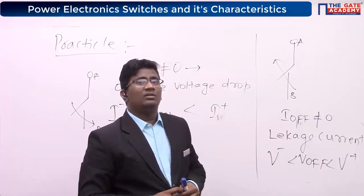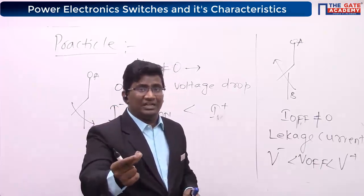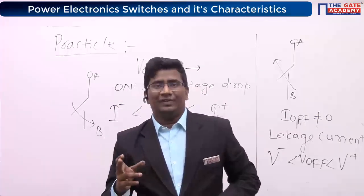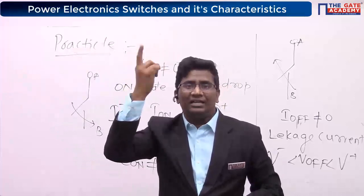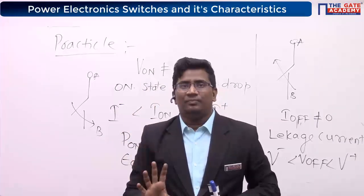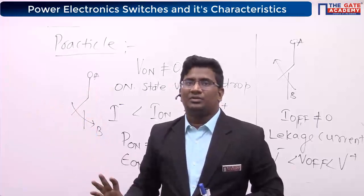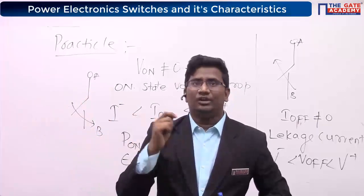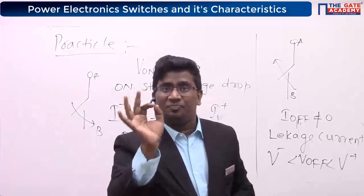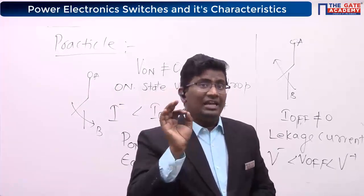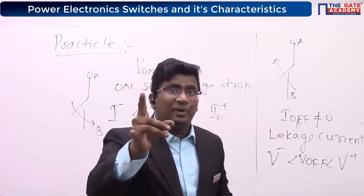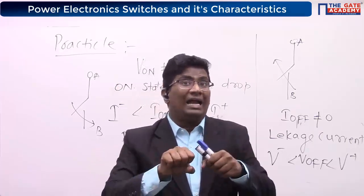Do you know about leakage current? Even though a switch is open, if the device is suddenly turned off — for example, a fan rotating at 1000 RPM — and you suddenly switch it off, have you observed any spark at that switch? That spark is due to leakage current or ionization of air.